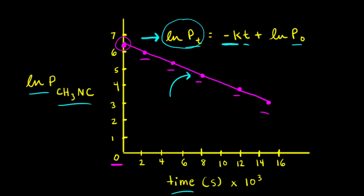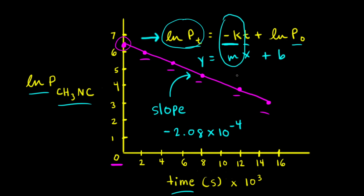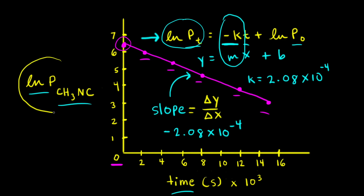There are many ways to find the slope of this line. Using a graphing calculator with the data from the data table, I found that the slope of this line is equal to negative 2.08 × 10⁻⁴. Writing y = mx + b, I need to take the negative of that slope to find the rate constant k. Therefore, k = positive 2.08 × 10⁻⁴. For the units, slope equals change in y over change in x: the natural log of pressure has no units, and x is in seconds, so the units for k are 1/s (s⁻¹).